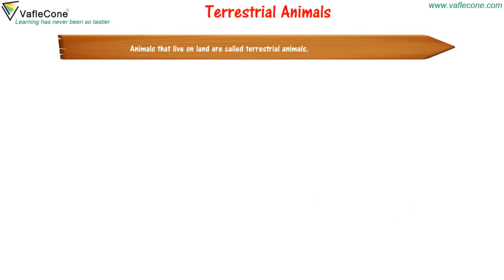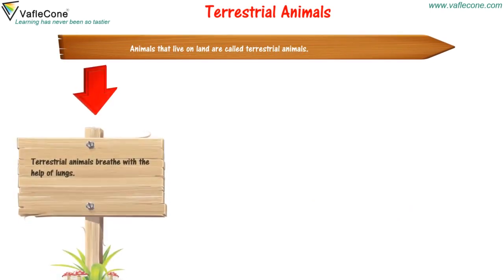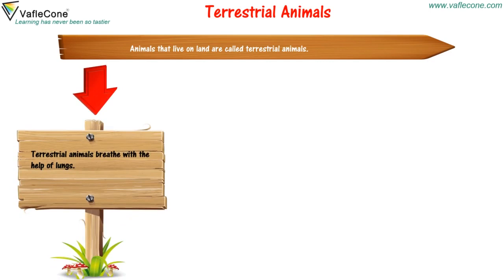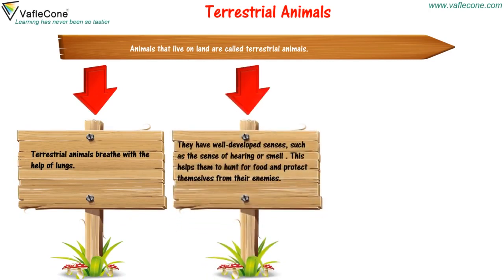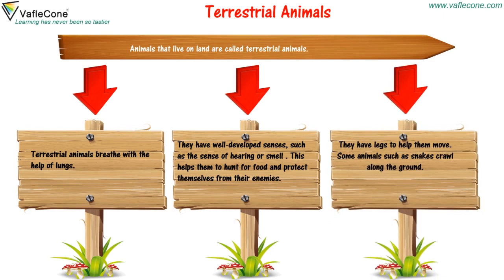Terrestrial Animals: Animals that live on land are called terrestrial animals. They breathe with the help of lungs. They have well-developed senses, such as the sense of hearing or smell. This helps them to hunt for food and protect themselves from their enemies. They have legs to help them move. Some animals, such as snakes, crawl along the ground.